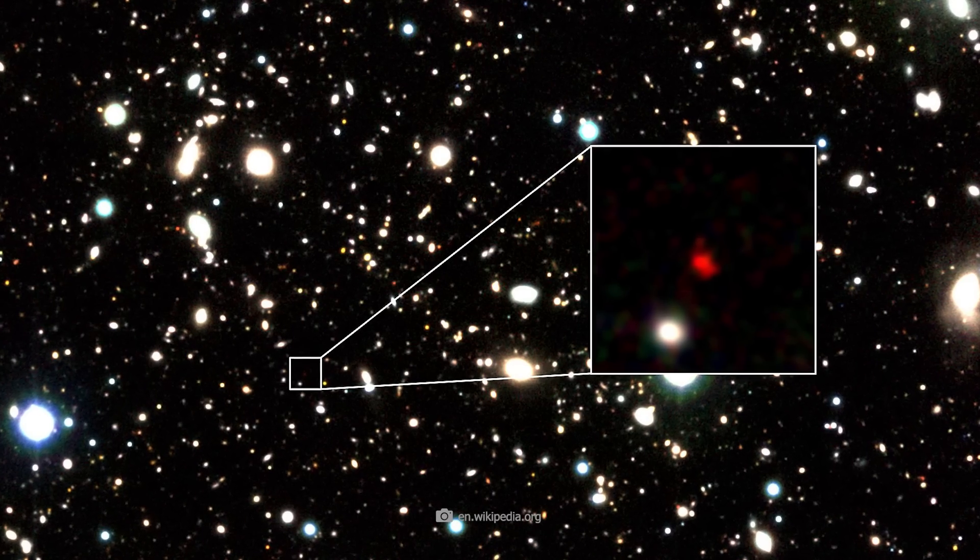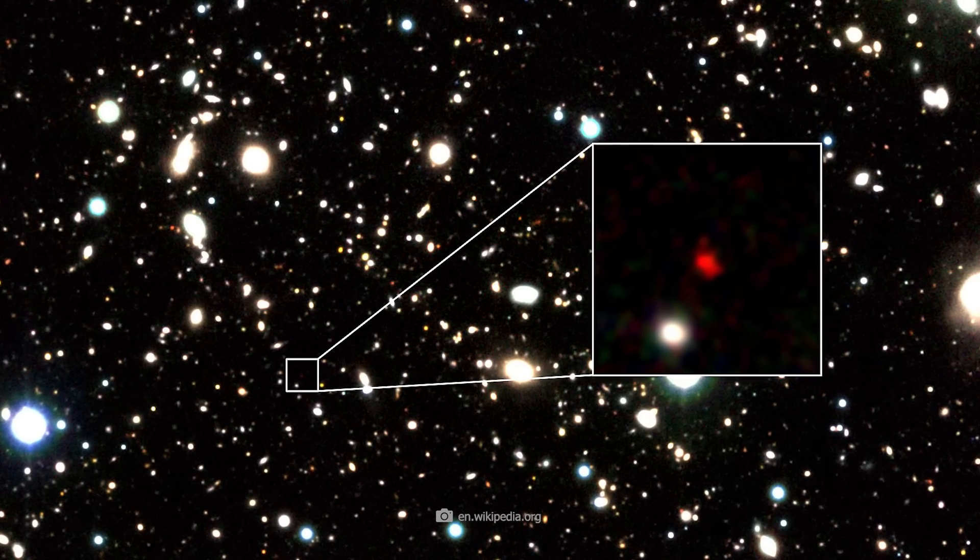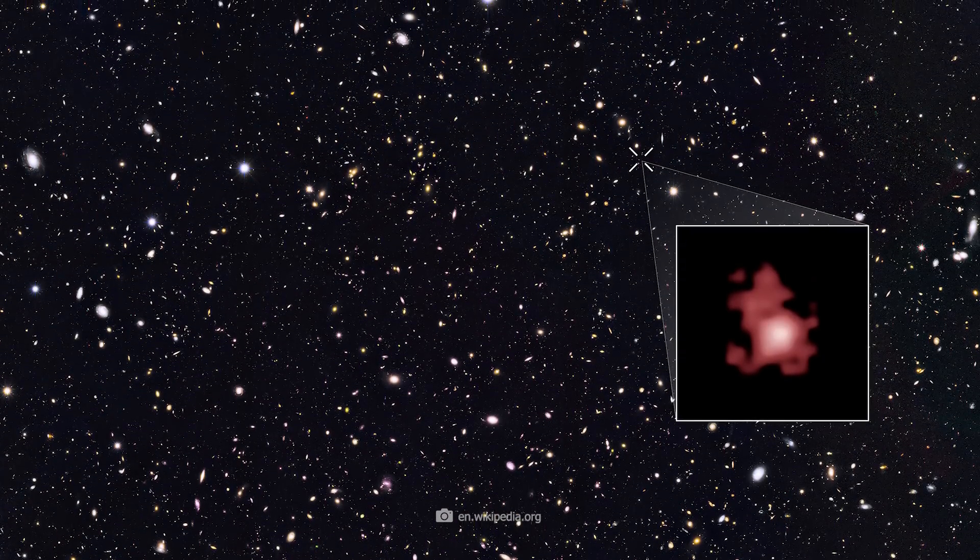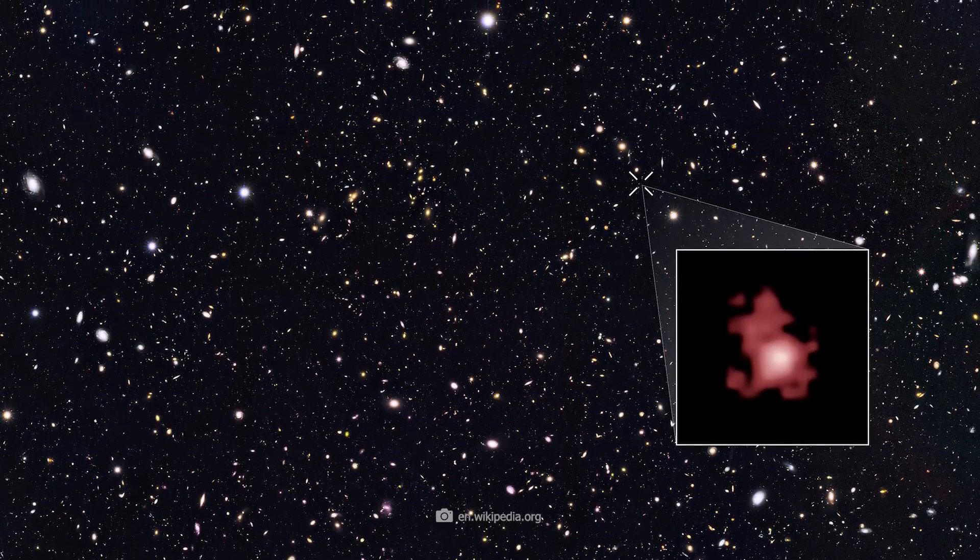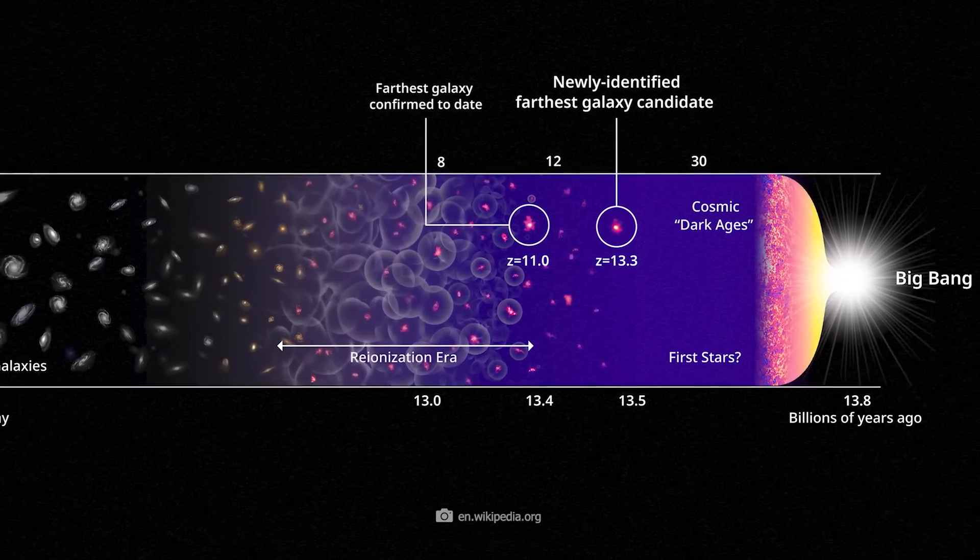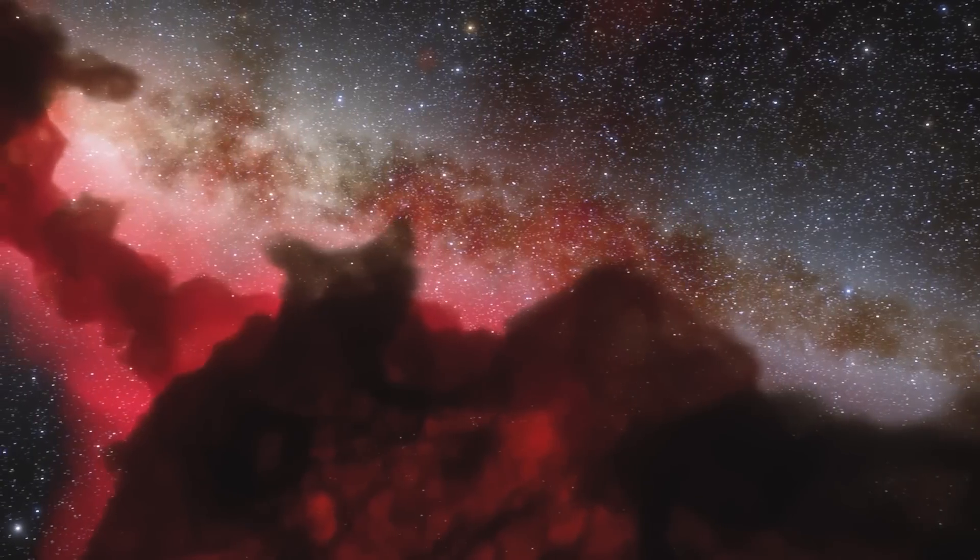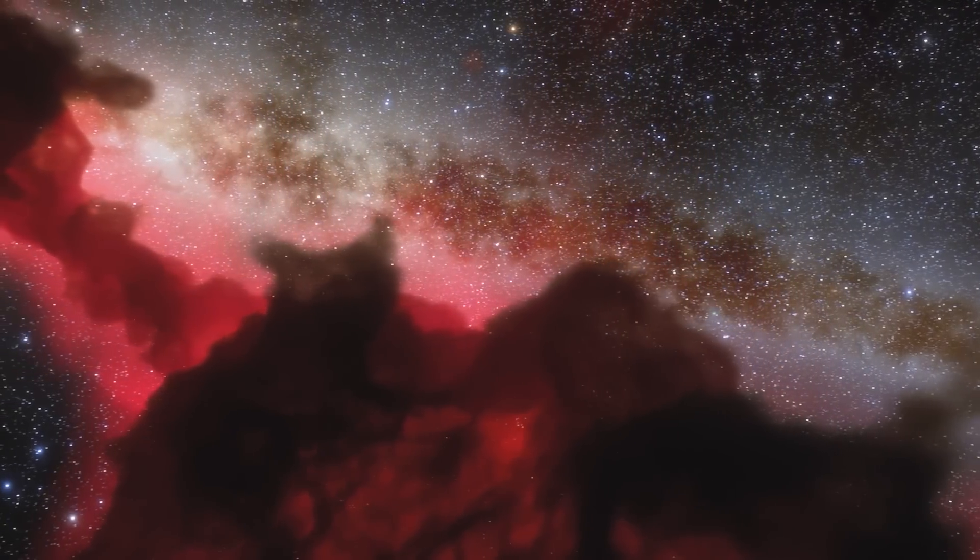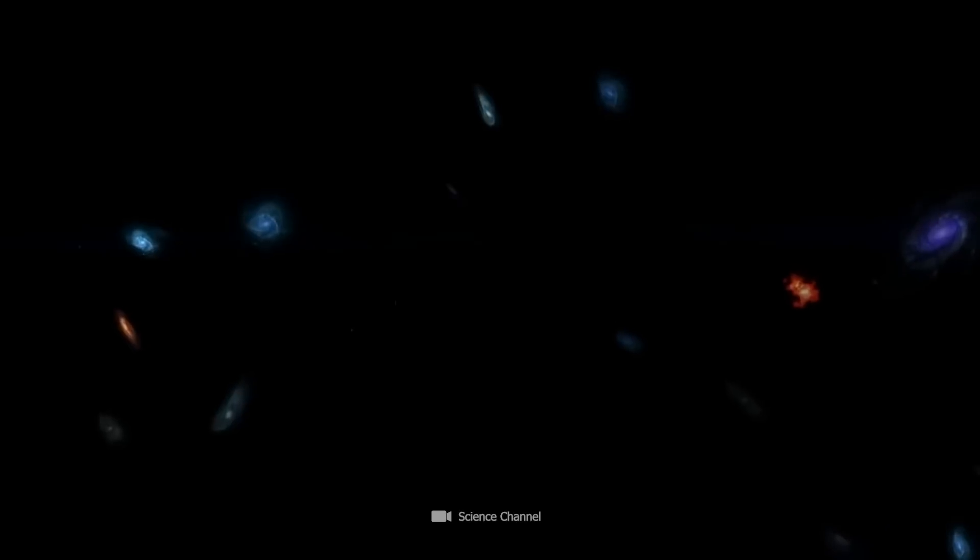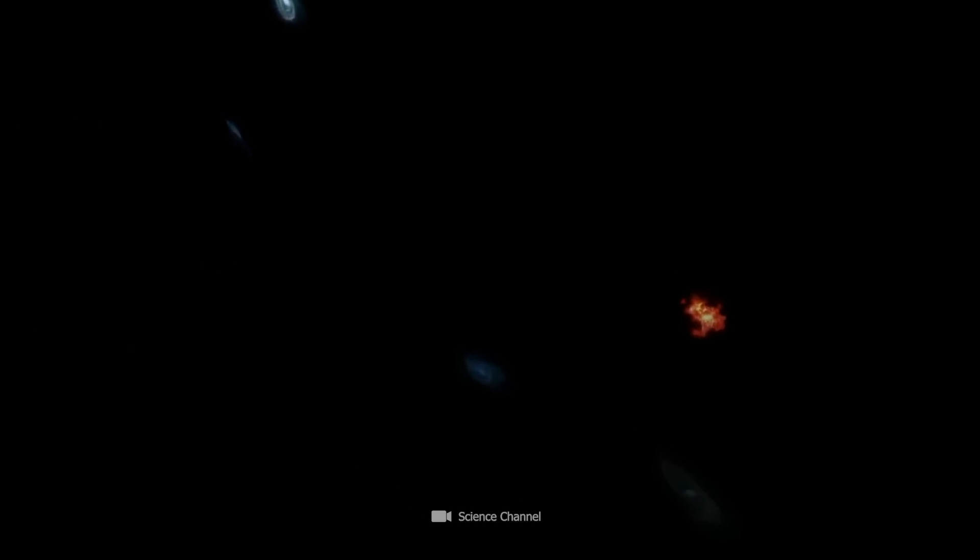HD1 is a galaxy estimated to be 13.5 billion light-years away. That's an unbelievable 100 million light-years further than the next galaxy, GNZ 11. HD1 existed 300 million years after the assumed Big Bang. With this discovery came some fundamental new questions. How could there have already been fixed galaxies of great luminosity and order in the still-so-young universe? And is the discovery real at all?